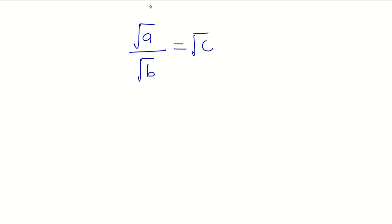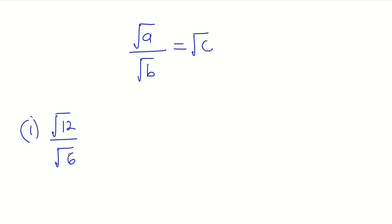To illustrate, let's take our first example. We are considering square root of 12 divided by square root of 6. We can see that square root of 12 is not in its simplest form, but without going through factors and perfect squares, if 12 is divisible by 6, then 6 goes into itself once and into 12 two times, which means our answer is square root of 2.